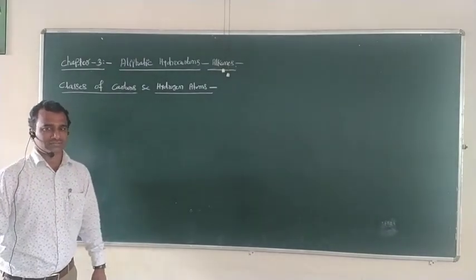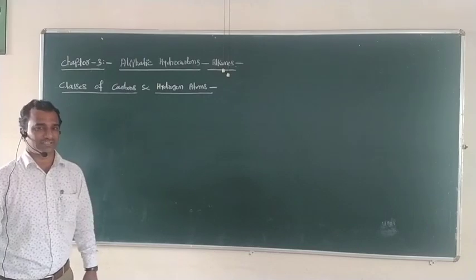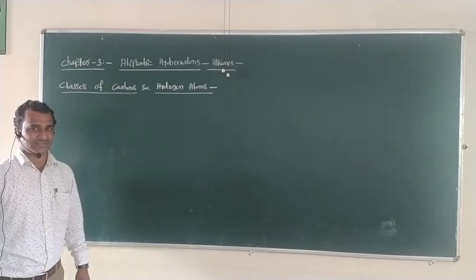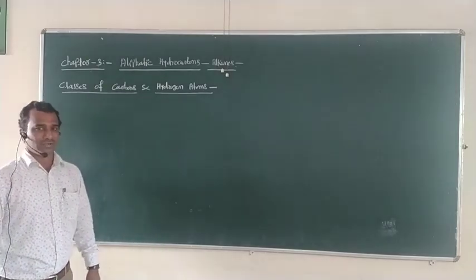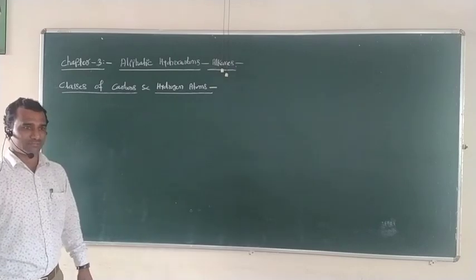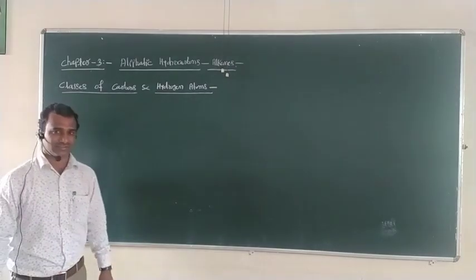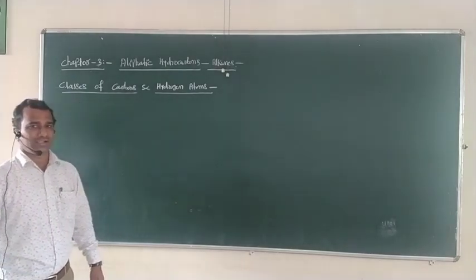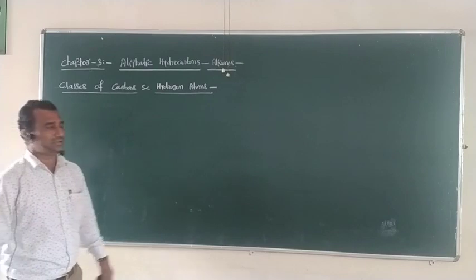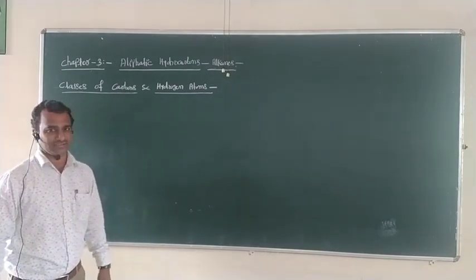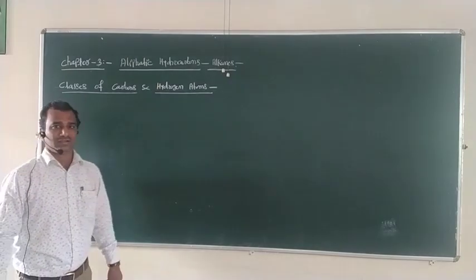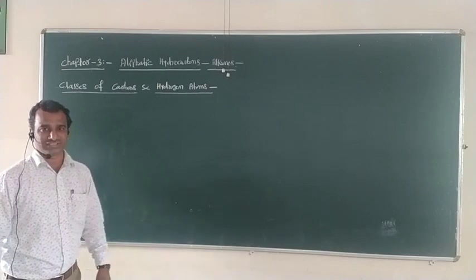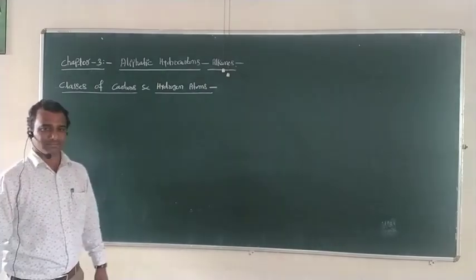Today we are going to start the next point of Chapter 3: Aliphatic Hydrocarbons — Alkanes. In our last video lecture, we discussed the simple basic points of aliphatic hydrocarbons: introduction, classification, and nomenclature of alkanes, including the trivial system and the IUPAC nomenclature system. In today's lecture, we are going to study the classes of carbons and hydrogen atoms.